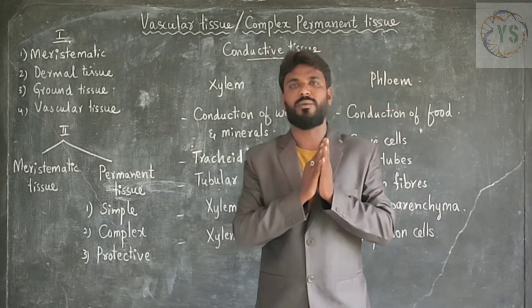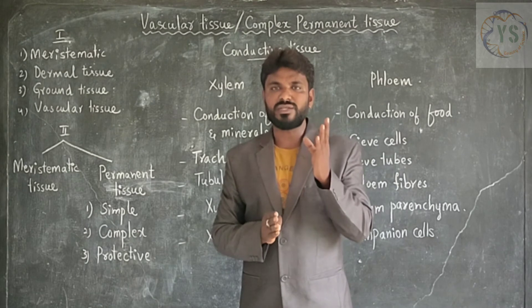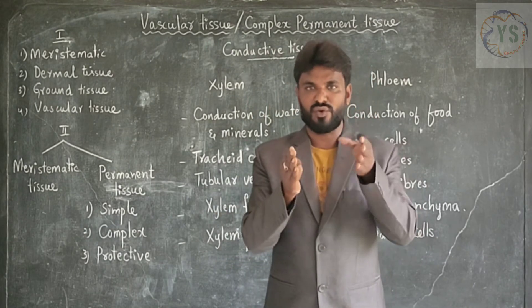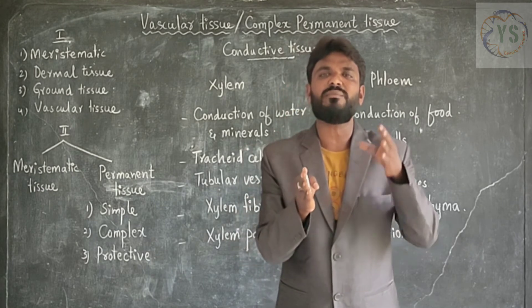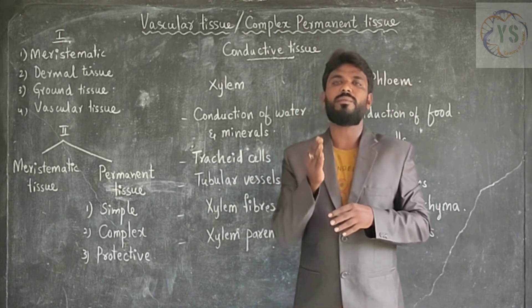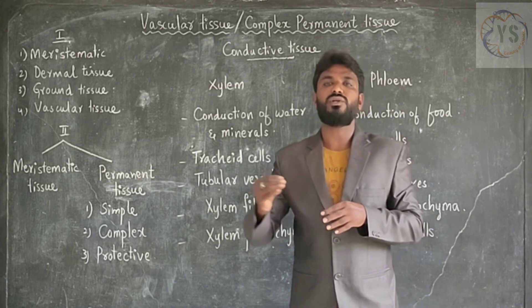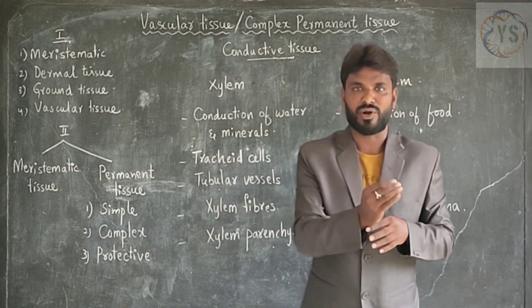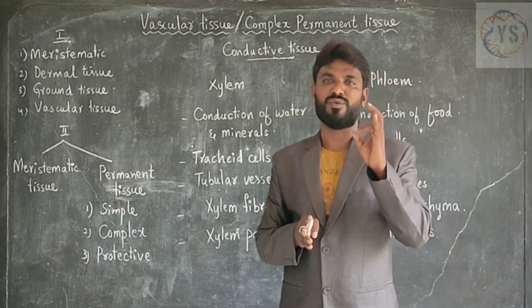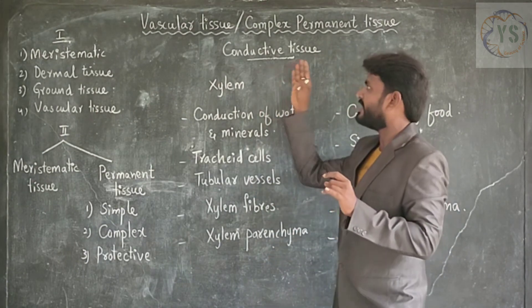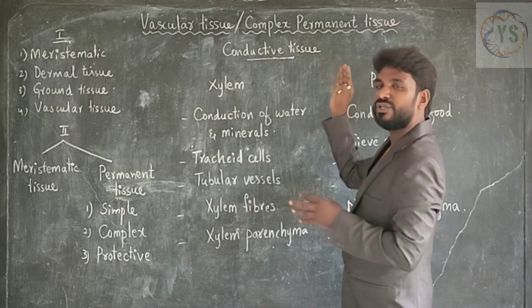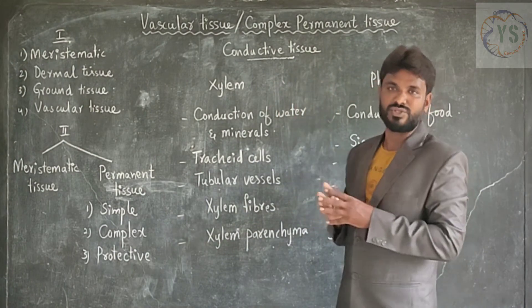This is about xylem and phloem. Vascular tissue has two kinds of tissues internally: xylem and phloem. The combination of xylem and phloem is called a vascular bundle. These vascular bundles are distributed throughout the plant body, involving transportation of water, minerals, and food material. That is why it is called conductive tissue. This is about vascular tissue, or complex permanent tissue, or conductive tissue.